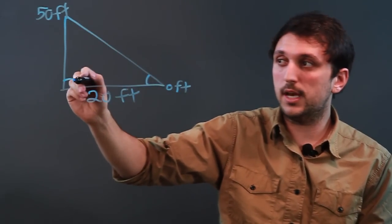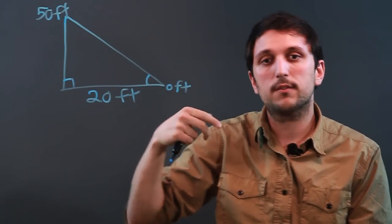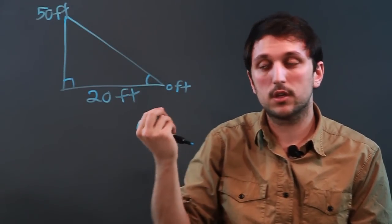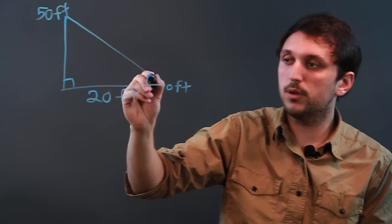Well, let's say we know this is 90. If we know that this is 20 and this is 50, we're looking for the angle. So we're going to have to do an inverse tangent because we have this angle we don't know.